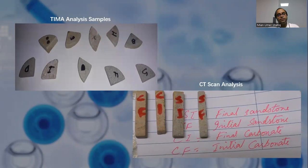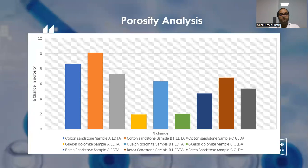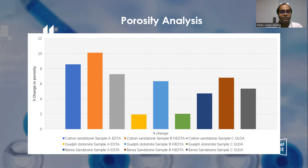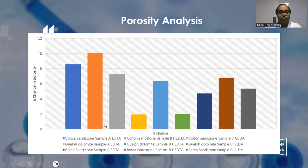These are small samples which are prepared for SEM/TEM and CT scan analysis. Now moving towards the analysis — first is the porosity analysis. Porosity is the amount of pore material, the amount of pores or empty spaces inside the rock sample. The best results in terms of porosity increase are shown by HEDTA for Colton sandstone, by HEDTA for Gulf dolomite, and by HEDTA for various sandstone, meaning maximum porosity increase occurs when we use HEDTA in all the rock samples.